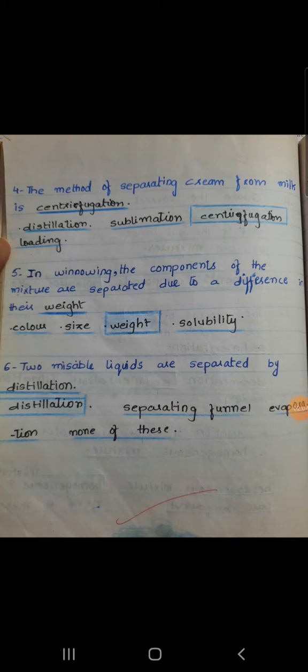Number six - immiscible liquids are separated by distillation. Your chapter has been finished. Complete your work. In the next video we will start